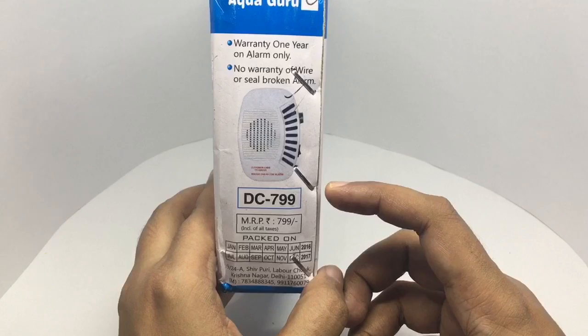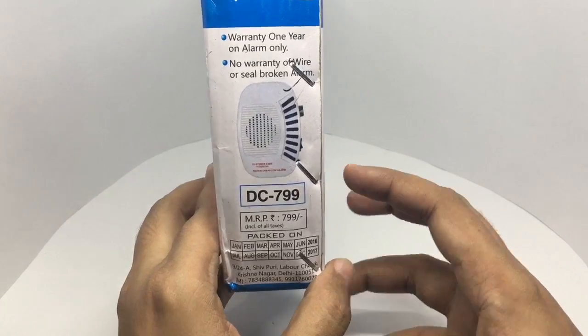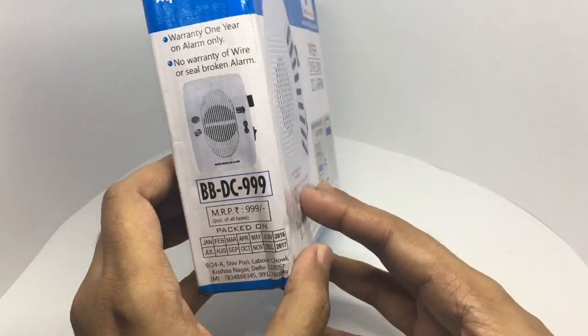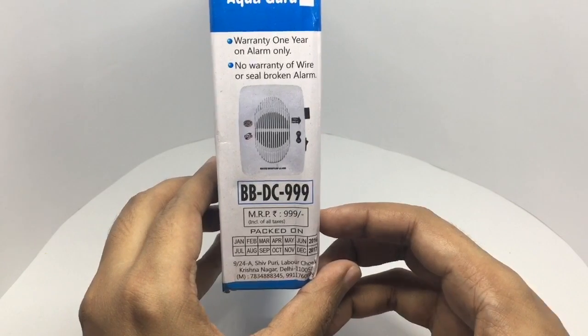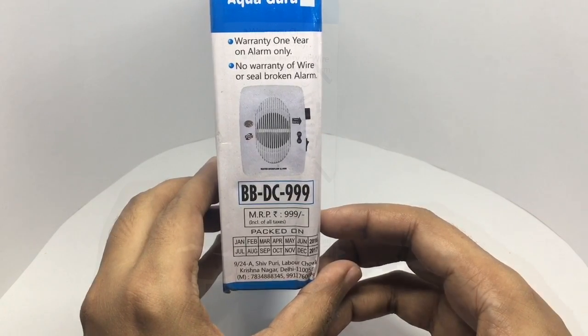Looks like there are two models: DC 799 and BB DC 999. Both of them look identical though. It's manufactured in New Delhi.